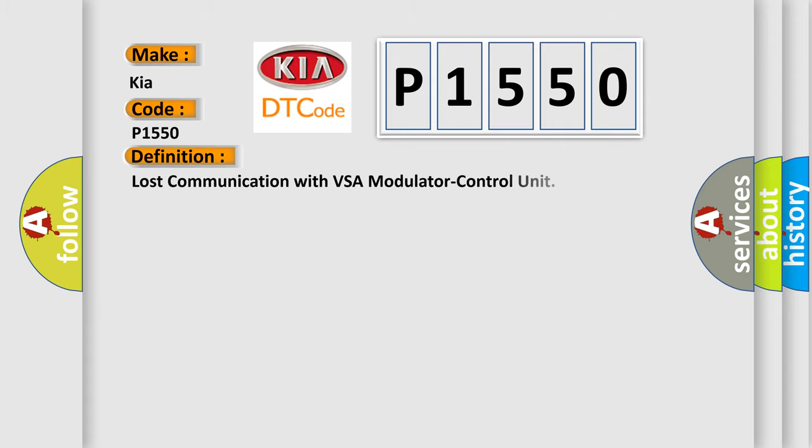The basic definition is Lost communication with VSA modulator control unit. And now this is a short description of this DTC code.